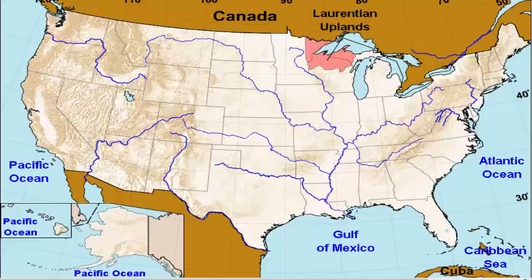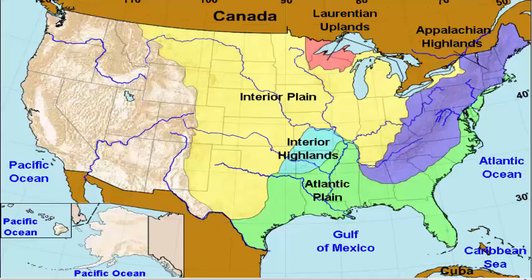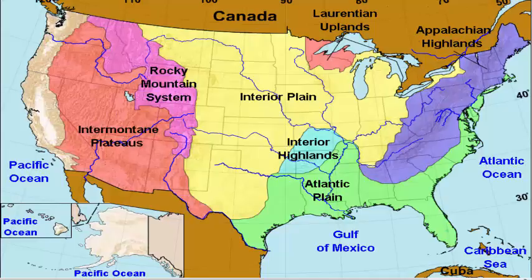Laurentian Uplands, Atlantic Plain, Appalachian Highlands, Interior Plains, Interior Highlands, Rocky Mountain System, Intermontane Plateau, Pacific Mountain System.